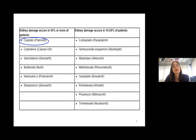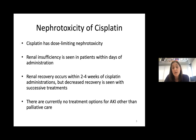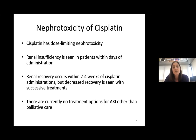Cisplatin causes kidney injury in 30% or more of patients even today. It is a really effective chemotherapeutic — when approved in 1978, the survival rate of testicular cancer was 10%, and now it's above 80%. The ability to reduce tumor burden with cisplatin is limited by its nephrotoxicity. If we could protect the kidney prophylactically, or give something to patients after cisplatin, we could prevent what's seen in some patients who don't have overt toxicity but still go on to develop chronic kidney disease.